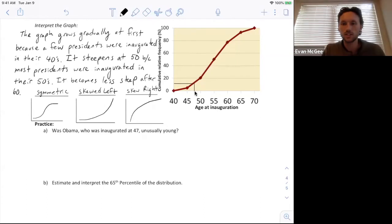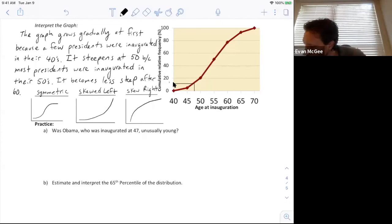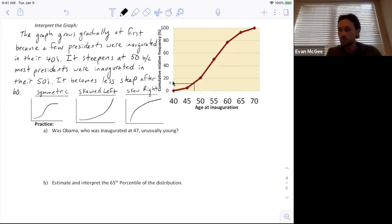So if his age is 47, it's about right there. Follow it up and over. I would say that's probably around 11. It's a little bit over halfway between these two. So we can say that he was older than 11%, or he is the 11th percentile with an age of 47. So if there are 11% of all presidents younger than him, I would say he's not unusually young, even though he might be relatively young, but not unusually young.